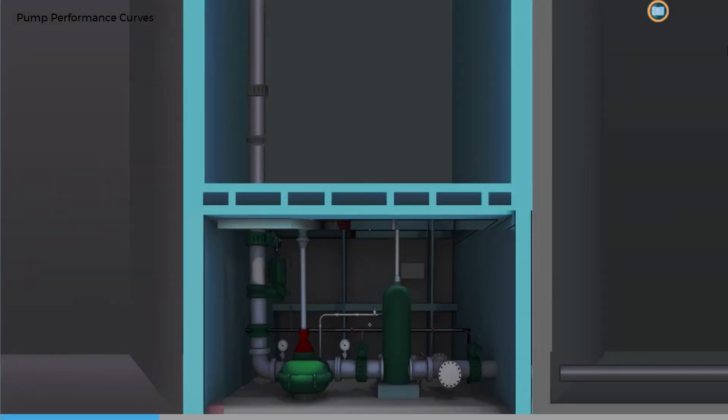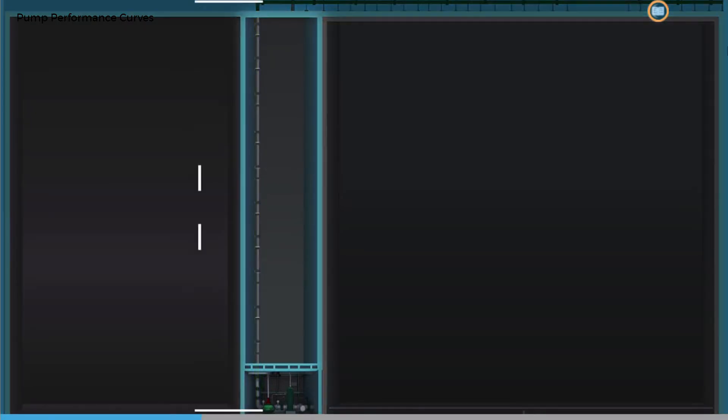When considering the pressure generated by a centrifugal pump, it's useful to think about how far up a column a pump can lift a liquid. Pumping system designers and manufacturers refer to this as head, or more accurately, discharge head.